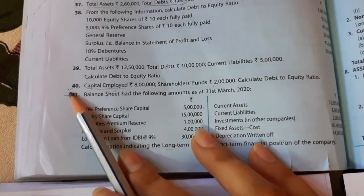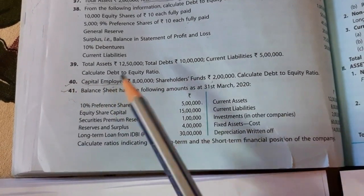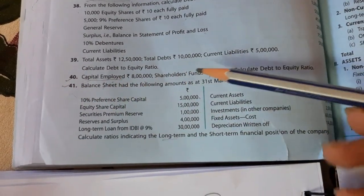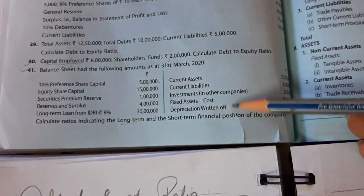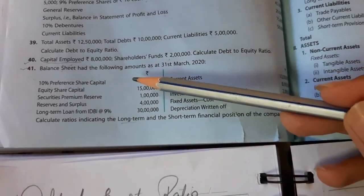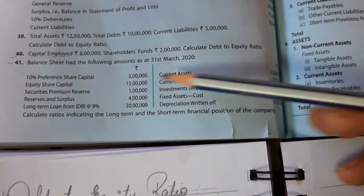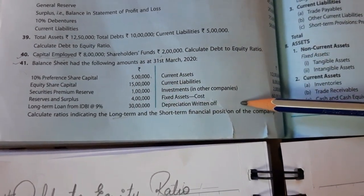Question number 41 provides some items from a balance sheet and asks to calculate the ratio indicating long-term and short-term financial position of the company.